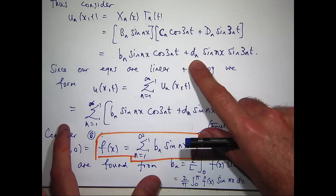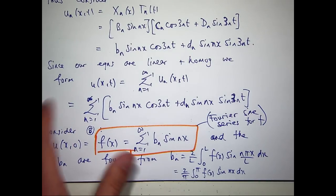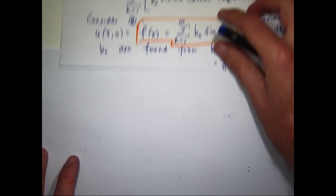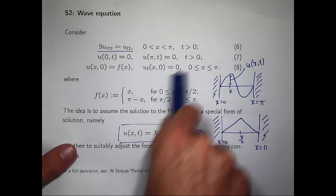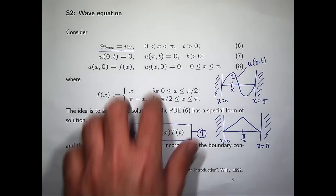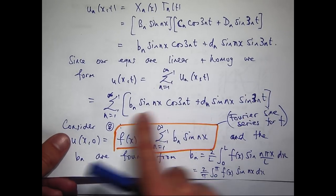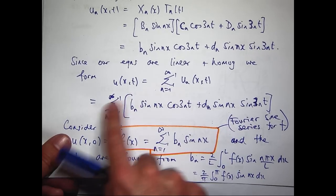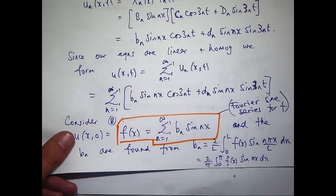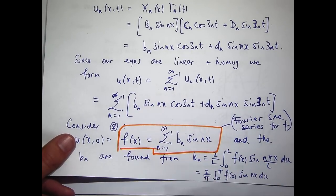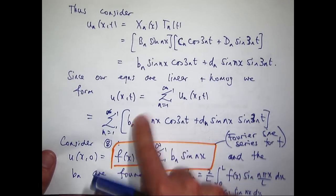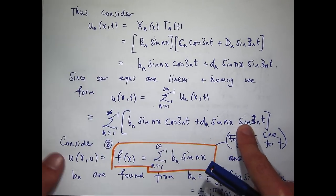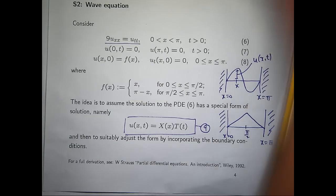What about the d sub n's? The other condition in 8 is that the string is released from rest. Go to the general form, differentiate with respect to t, and plug in t equals 0. The sine term gives 0, the cosine term becomes 1, and you get the following.